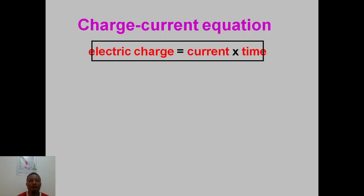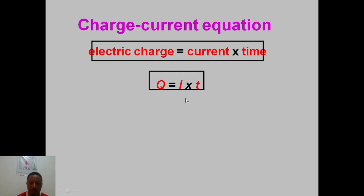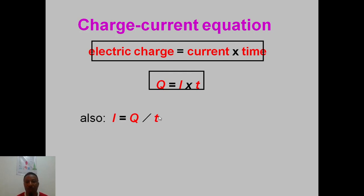We can calculate current using this formula: charge Q equals current I times time t. Since current is the flow of charge in a given time, current I equals charge Q divided by time t — that is, charge per second. For current we use I, for charge we use Q, and for time we use t, so I = Q/t.